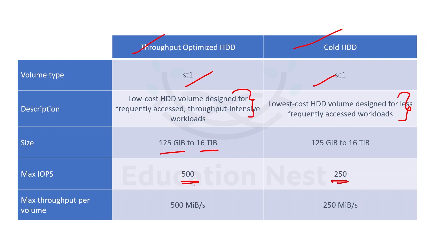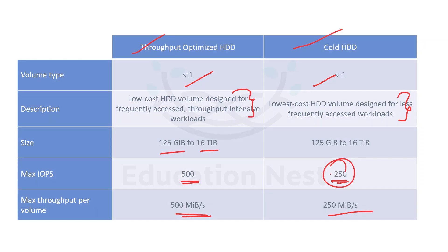HDD is more about throughput intensive workloads rather than IOPS, so it is more focused upon throughput. With ST1 we get 500 MBps throughput, and with SC1 we get 250 MBps. The IOPS is also reducing with SC1.